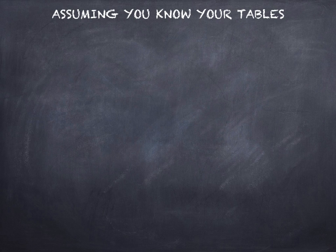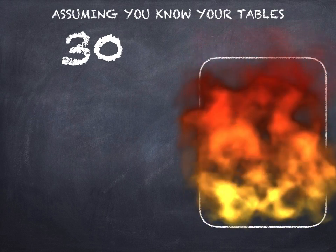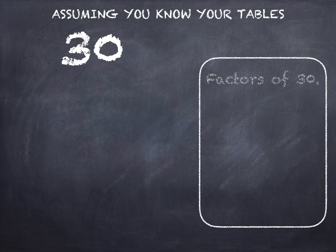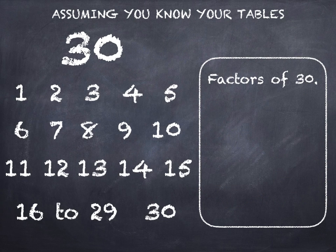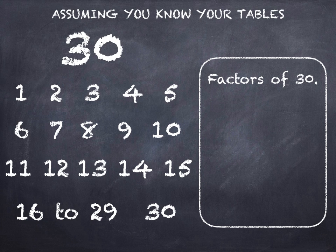Now assuming you know your tables, let's do it slightly more quickly. So we're going to look at the factors of 30. We need all the numbers from 1 to 30, but I've taken 16 to 29 and put them separately because anything over half, apart from 30 itself, won't be a factor.